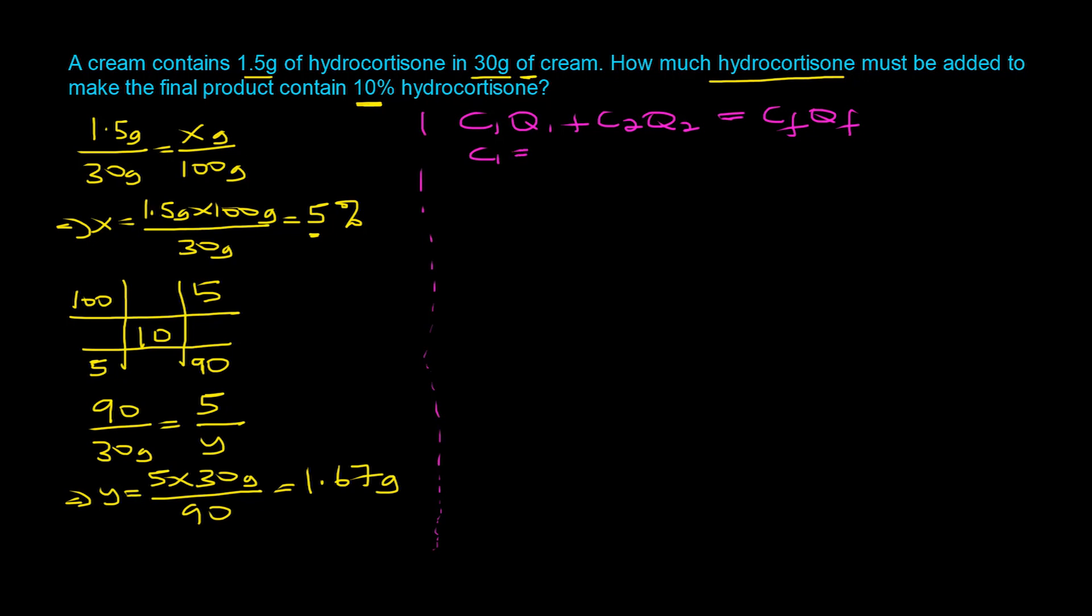Our C1 is 5%, which is the 1.5 grams of hydrocortisone in the 30 gram cream. The quantity is 30 grams. C2 is the concentration of your hydrocortisone, which is pure, so the concentration is 100%. The quantity we don't know, that's what we're trying to determine, so we'll call that Q2. CF, the final concentration, is 10%. Our QF, the final quantity, is the sum of Q1 and Q2. So QF equals Q1 plus Q2, which means QF equals 30 grams plus Q2.